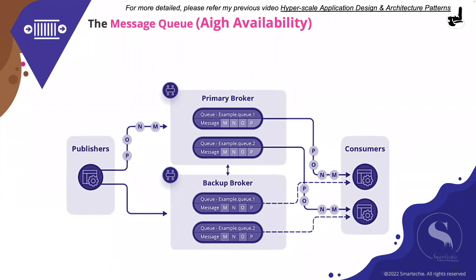Persistent messages should be automatically synchronized between the active and standby brokers before sending an acknowledgement to the publisher, so there is absolutely no message loss. Once a failed broker comes back online, message reconciliation should happen automatically in the background for persistent messages. A monitor broker should be considered to avoid split-brain scenarios. Finally, message order should be preserved across all consumers regardless of their quality of service settings.